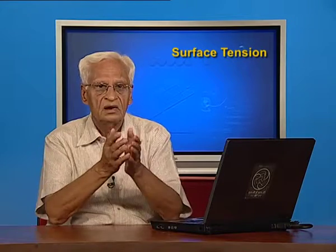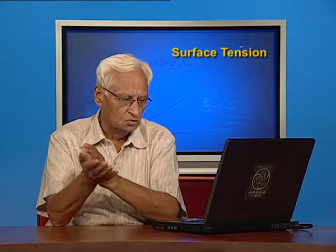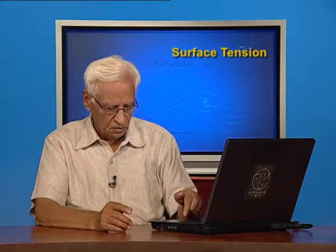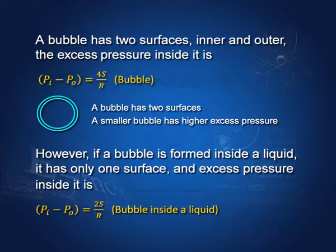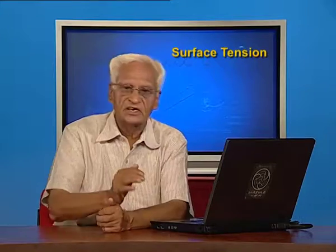A bubble will have two surfaces — one inside and one outside. Therefore the excess pressure inside a bubble is 4S/r because there are two surfaces. For a drop, there is just one surface, and therefore the excess pressure is just 2S/r.